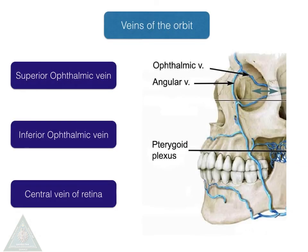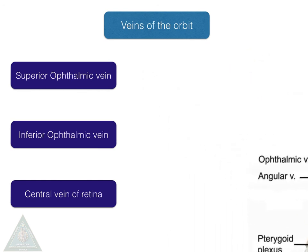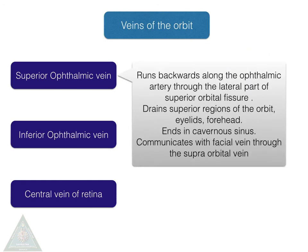The veins of the orbit are the superior ophthalmic vein, inferior ophthalmic vein, and the central vein of the retina. The superior ophthalmic vein runs backward along the ophthalmic artery through the lateral part of the superior orbital fissure. It drains the superior regions of the orbit, eyelids, and forehead, and ends in the cavernous sinus. It also has a communication with the facial vein through the supraorbital vein.